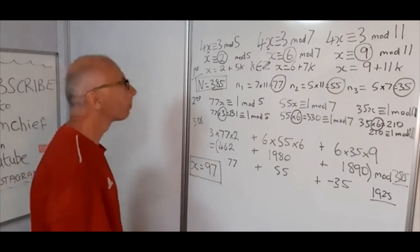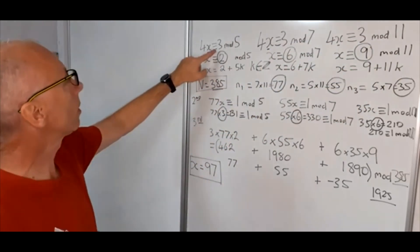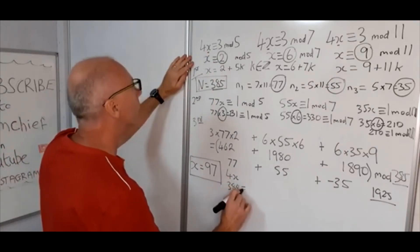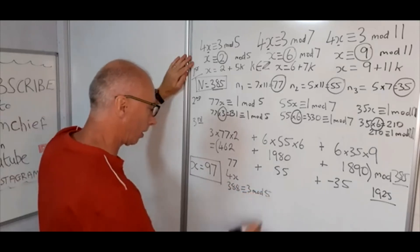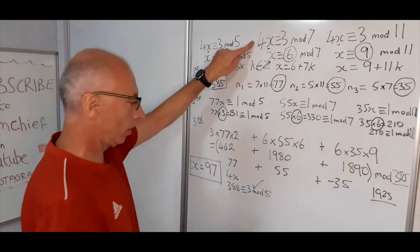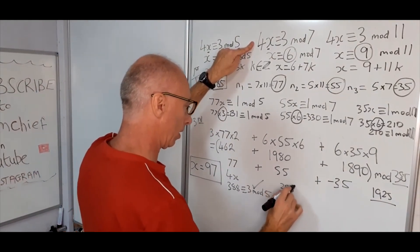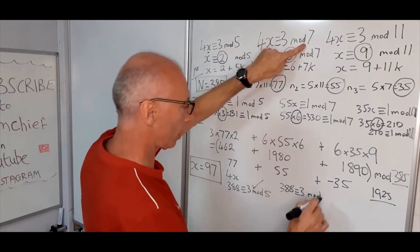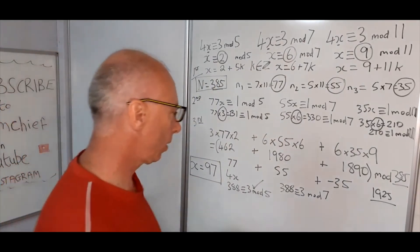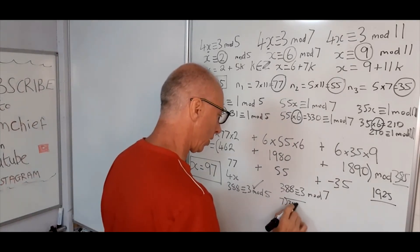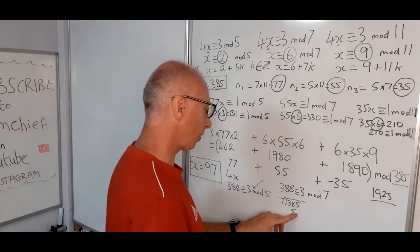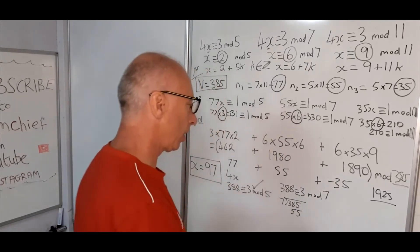And now what we need to do is just check it. So I've worked with the original question. 4x, so 4 times 97, so that's 388, is congruent with 3 mod 5. Well 388 minus 3 is 385. We know it divides by 5. We can check that one. So now let's check the next one. 4x congruent with 3. So we want 388 congruent with 3. This time our modulo is 7. So basically 7s into 385, well we know that divides. 7 times 50 is 350. And 7 times 5 is 35, 350 plus 35, so that's 55 times. So we know that's checked.